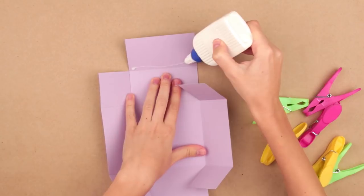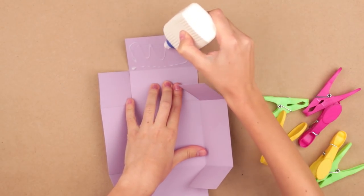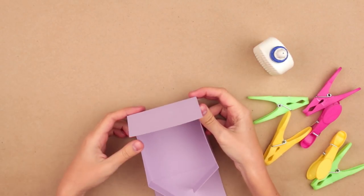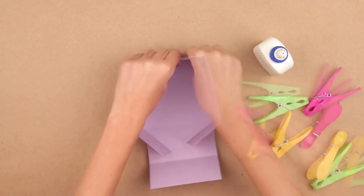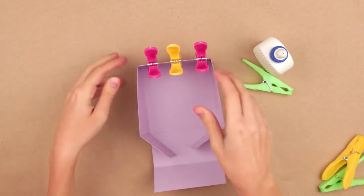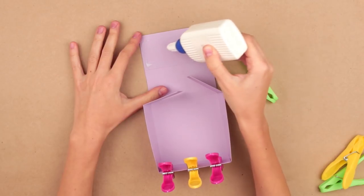Add glue to the biggest flap. Fold the side walls and cover them with the flap. Attach with clothespins. Make the same on the other side.